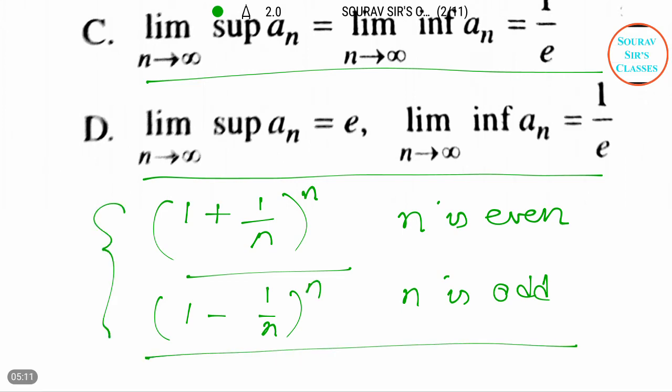So when n is even, then 1 plus 1 by n to the power n. And when n is odd, then 1 minus 1 by n whole to the power n.